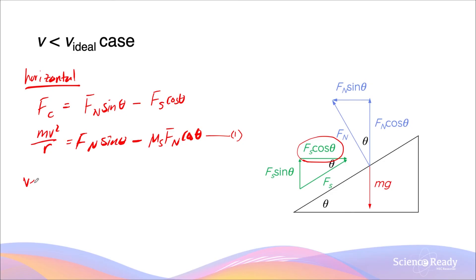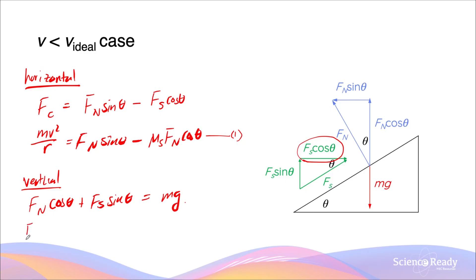For equation 2, let's do the vertical component. In the vertical plane, all the vertical vectors should add up to a net force of zero. But this time, the friction vertical component is acting upwards in the same direction as the vertical component of the normal force. So when these two combine together, Fn cosθ + Fs sinθ, their combined magnitude equals the downward acting weight force. Substituting friction: Fn cosθ + μs·Fn·sinθ = mg. Let's call this equation 2.